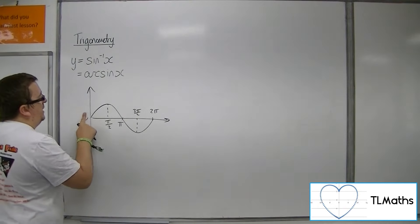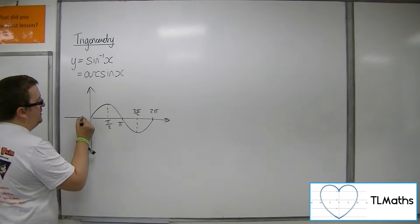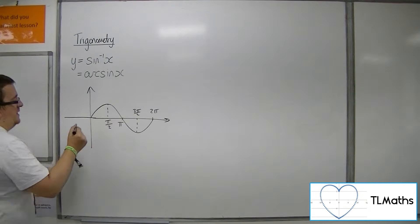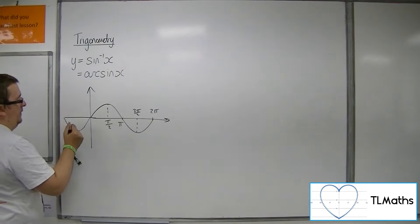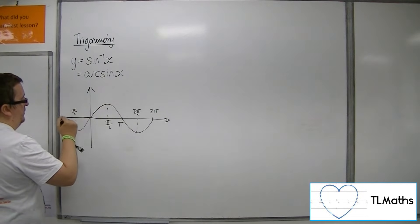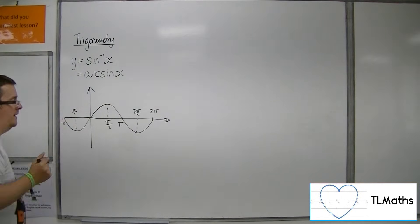So what we're going to do is restrict the domain. And the easiest way to do this is to think of extending the sine curve to the left of the y-axis. So let's go to minus pi over 2, minus pi, like that.